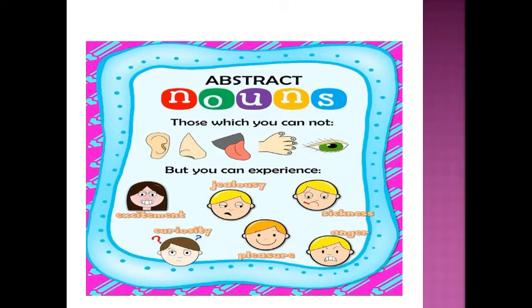Abstract noun — things which we cannot hear, smell, taste, touch, or see, but we can experience them. Examples include jealousy, sickness, colors, and sunlight.